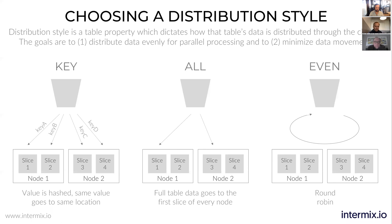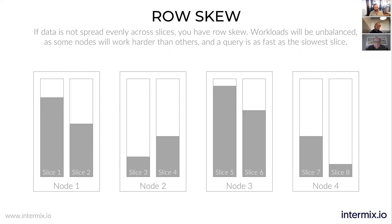The downside is that you end up having row skew. Row skew occurs when you're using a key-based distribution style and the distribution of data on your distribution key is not random. For example, if your key is zip code and all your customers are in one city, one node will have far more data than others. Your scan is only as fast as the slowest node, so scans become slower and distribution becomes uneven.